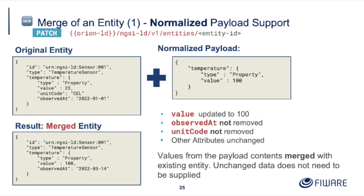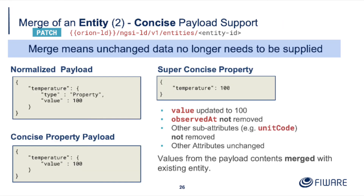Merge patch is new. Merge patch is like a forensic knife. If you put in a payload with a type and a value — or just a value in concise format — you will just change that value. ObservedAt will not be removed. Unit code will not be removed. Other attributes will not be changed. Merge patch says: this is my payload, this is what I want to change — merge it with the stuff I've got, everything else is left alone. Concise also works with this endpoint. Whether you put in type as property, or just value equals 100, or just temperature: 100, the value will be updated and nothing else gets changed.